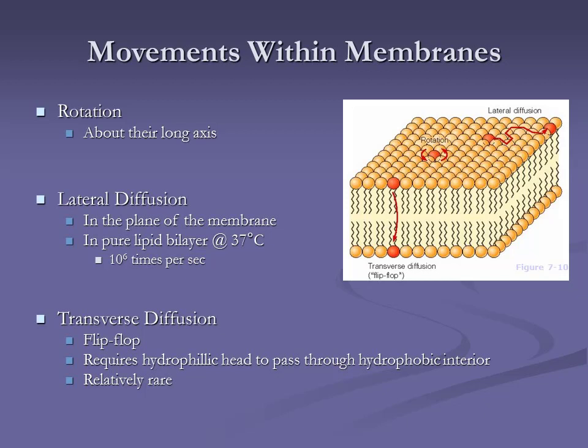Even with all this flipping back and forth — this transverse diffusion — what's the net transverse diffusion of phospholipids? Zero, because you've got as many flipping down as flipping up. How does the membrane stay selective if everything is moving around? Because this layer, no matter what's flipping, is hydrophobic. Those chemical interactions prevent polar molecules from passing through — they're not all flipping at once.